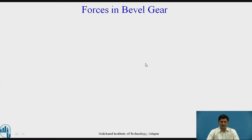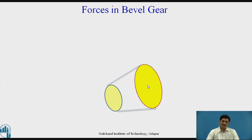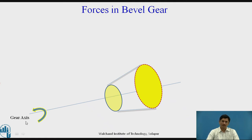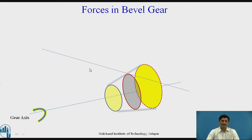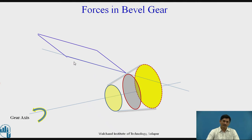Let us consider this schematic representation of a bevel gear. It is a cone, with a center line — the axis of rotation — indicated as counter clockwise looking from this end. This is the pitch plane or the plane of rotation. At this point, a tangent is drawn and a particular pitch point is considered. This is the plane in which we will find the resultant force, indicated as Pn or P.